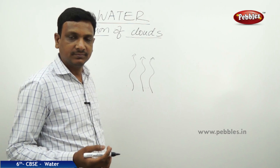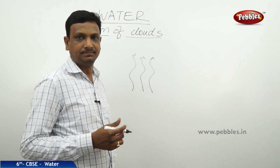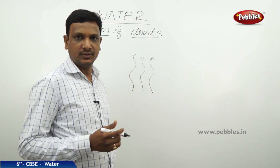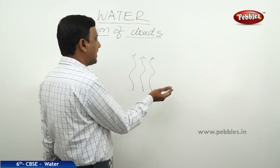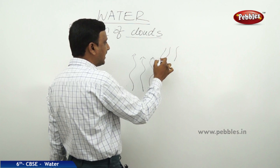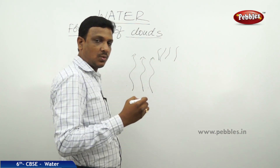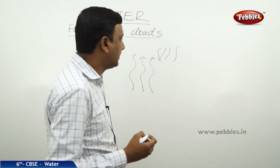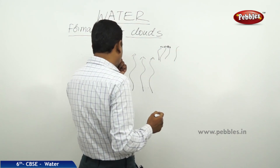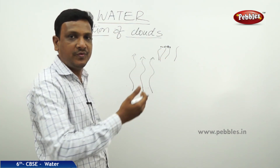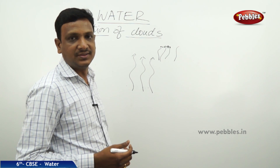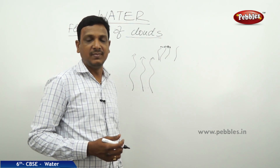The air with water vapour is going up, travelling upward. As it rises, it gets cooled. When the air is cooled at certain heights, the water vapour present in the air gets condensed into tiny droplets of water. So cooling of air causes the water to condense.